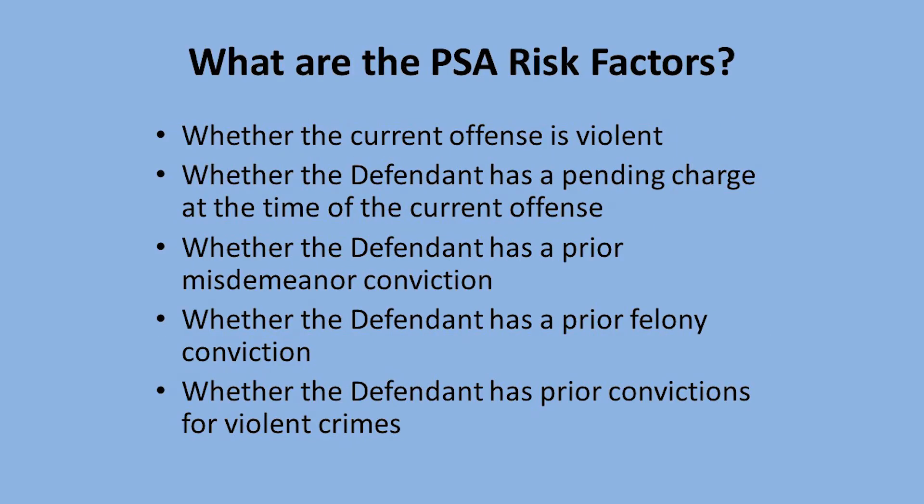The nine PSA risk factors include: whether the current offense is violent, whether the defendant has a pending charge at the time of the current offense, whether the defendant has a prior misdemeanor conviction, whether the defendant has a prior felony conviction, whether the defendant has prior convictions for violent offenses — including murder, sexual assault, assault, burglary of habitation, and attempted or conspiracy to commit any of these offenses.